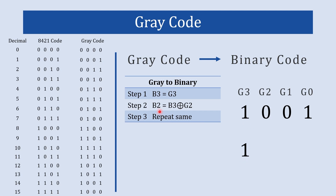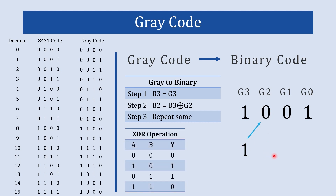In step number 2, b2 is equal to b3 XOR g2. Here b3 is this value and g2 is this value — to get b2 you perform the XOR operation of b3 and g2. Here is the XOR table. So 1 XOR 0 gives us 1, and we will write 1 here.